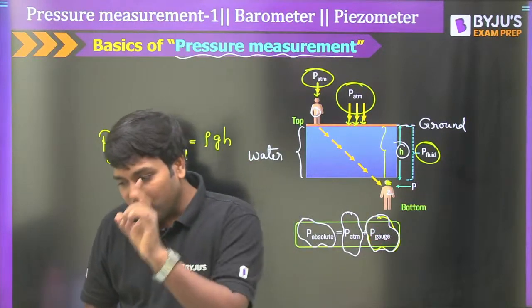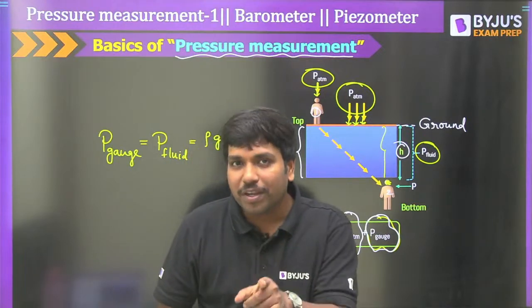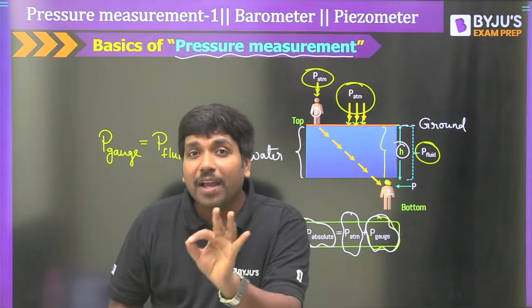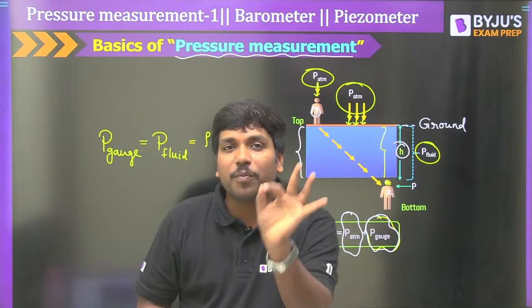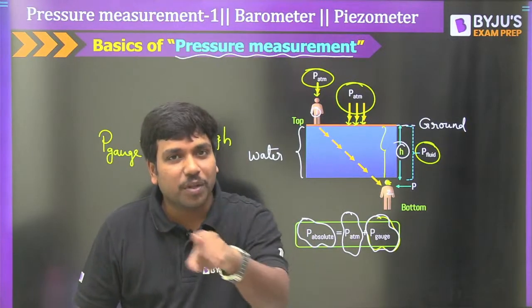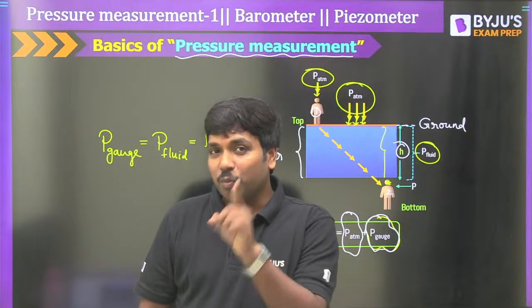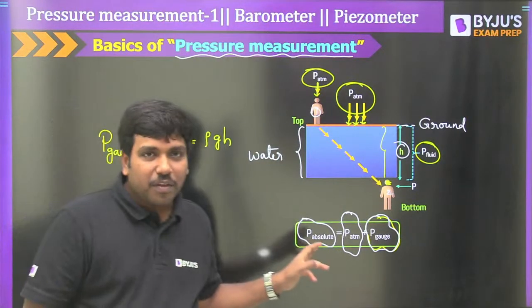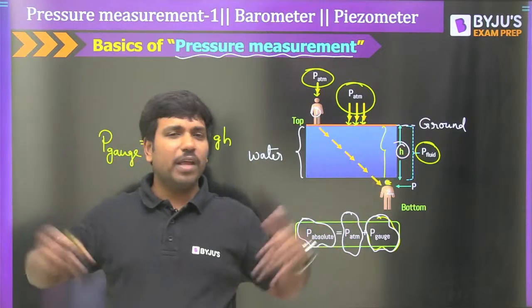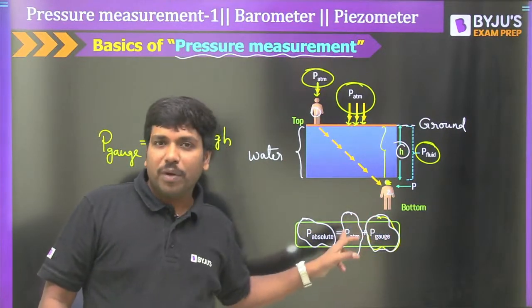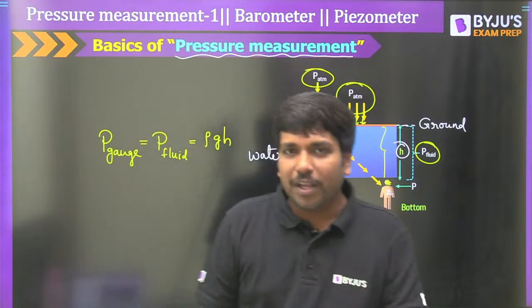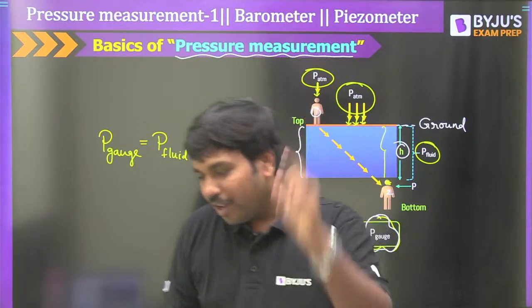It is your duty to find out which gauges, sensors, or techniques can directly give the data of absolute pressure. I want to know this in the next session. Which devices or sensors can directly give the reading of absolute pressure? We know several sensors measure gauge pressure, and barometer reading is added to get absolute pressure — but do you have sensors which directly provide absolute pressure?